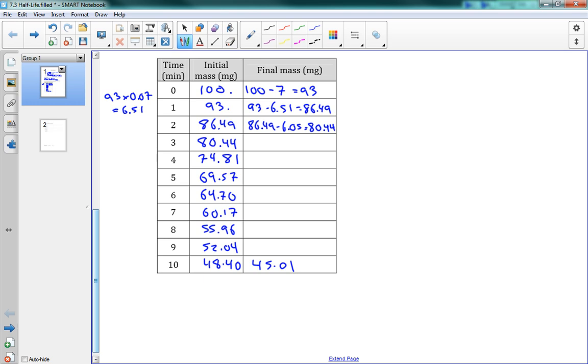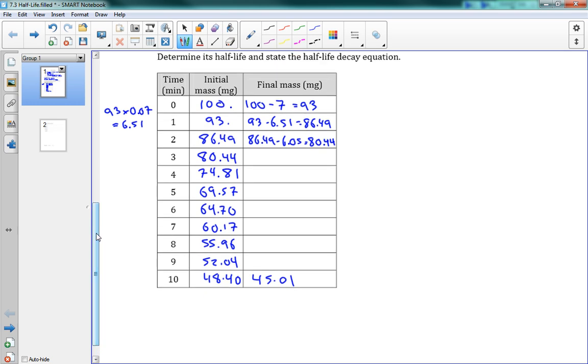So we have 80.44, and down another 7%, 74.81, and then 69.57, 64.70, and each time I'm just doing 7% off. Here's 60.17, 55.96, 52.04, and 48.40. And I'll fill in this last little bit here. At the end of that tenth minute there, 45.01. So our first column here is the time, the amount at that time. So at time 0 we have 100, at time 10 we have 48.40 left. The question asked us to find the half-life. We want to find where did it go down to half of its initial amount. We want to find it started at 100. Where did it get down to 50 milligrams? Well, that happened halfway between time 9 and 10. So I'm going to say that therefore our half-life is equal to about 9.5 minutes. And then we can write our equation here. A is equal to A0, one half, T over 9.5. That's our half-life. That's what the question was asking for, the half-life decay equation.